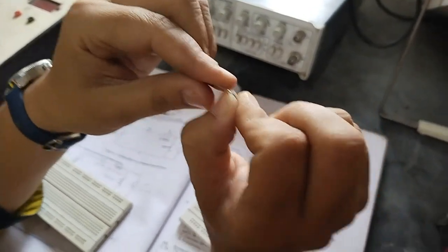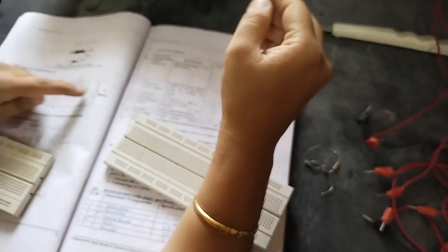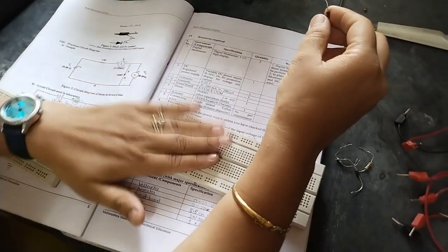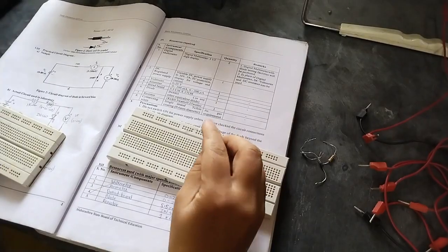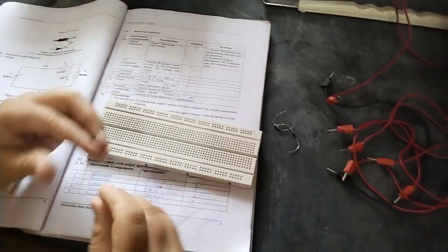So let us connect the circuit on this breadboard. As shown in diagram we are going to connect similar circuit on this. While connecting the circuit we should have the diagram along with us. So we should have one resistor.